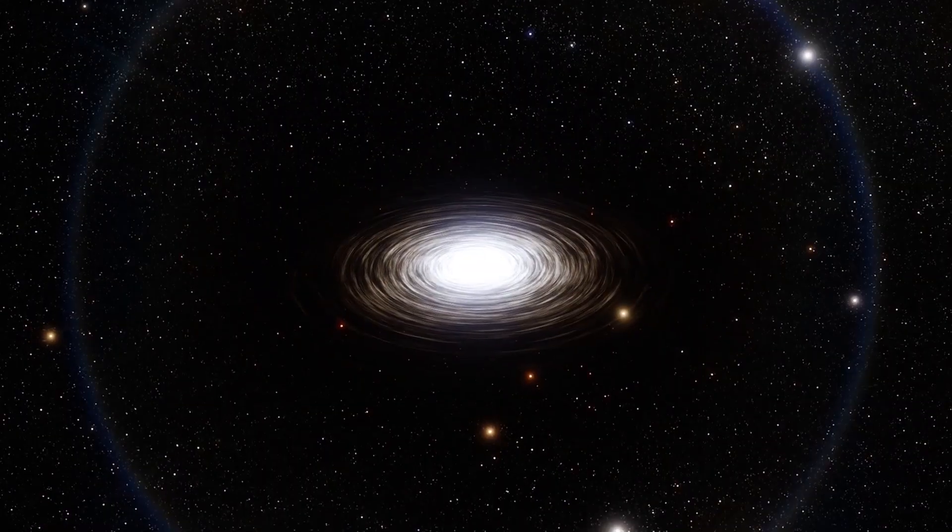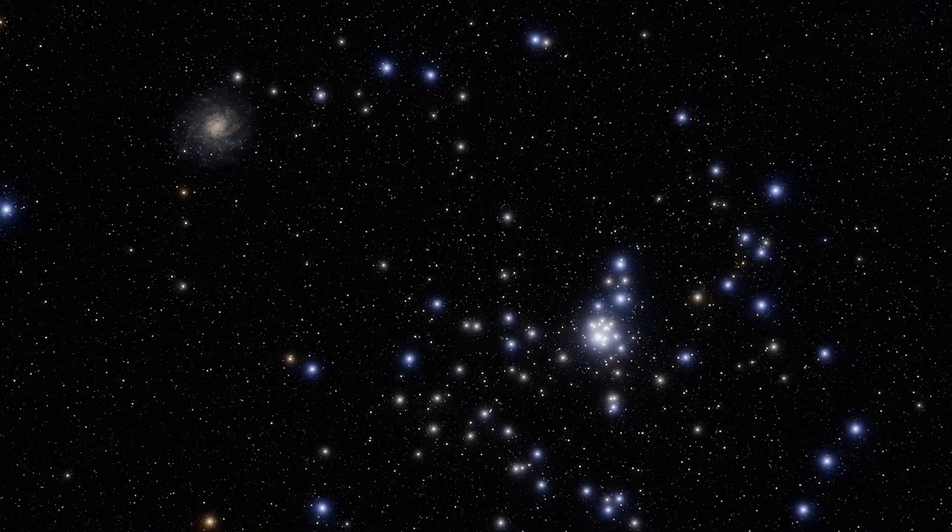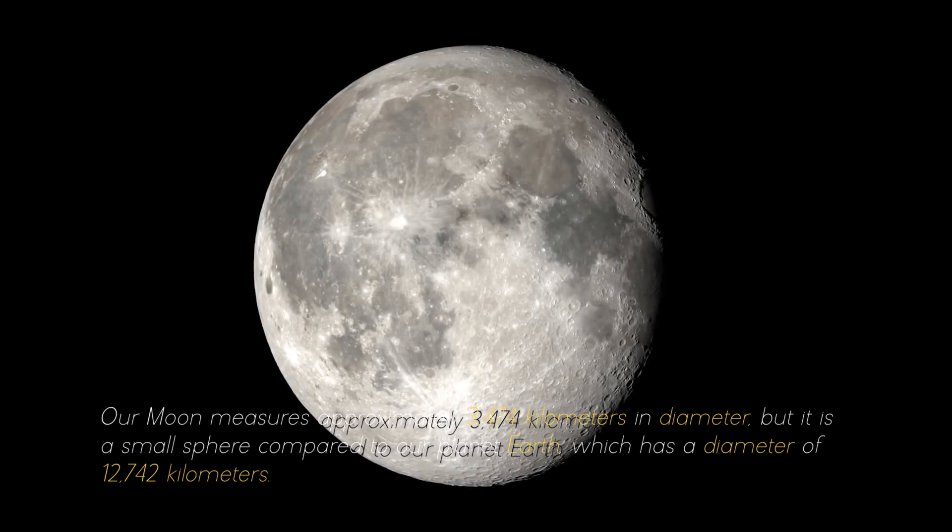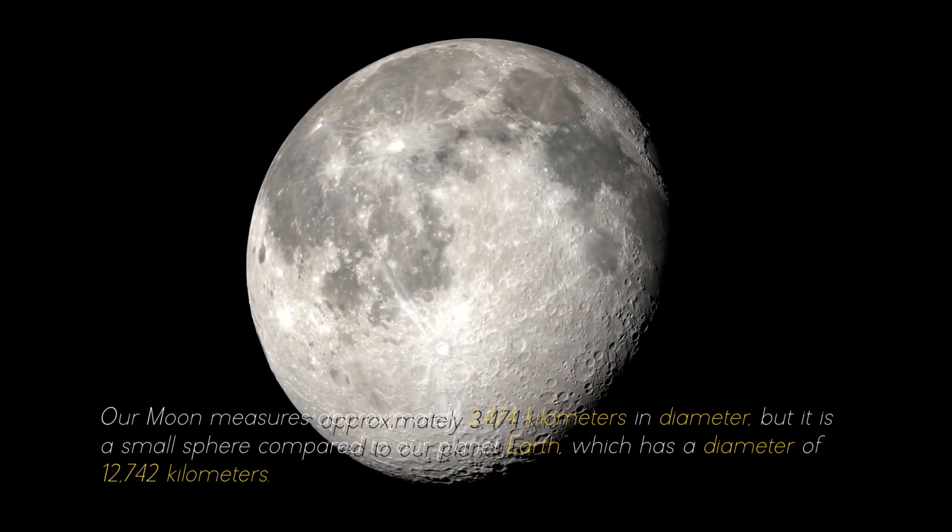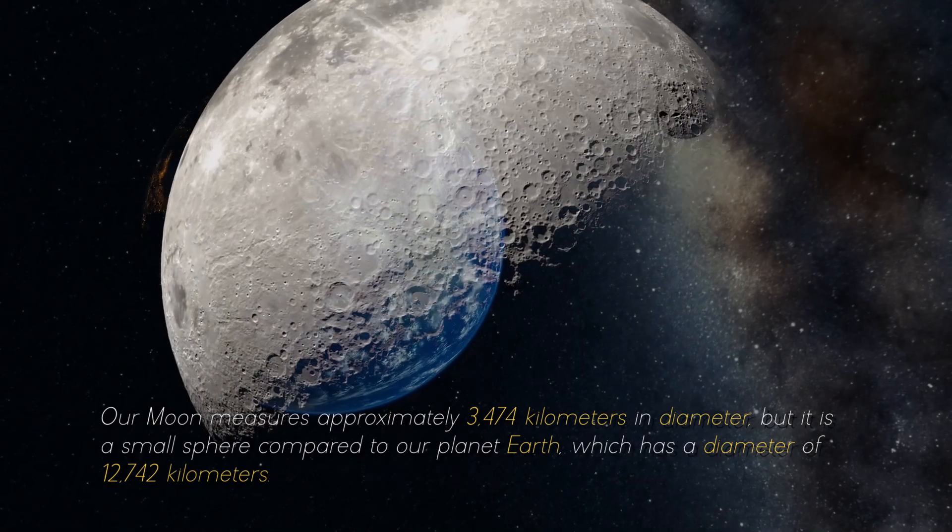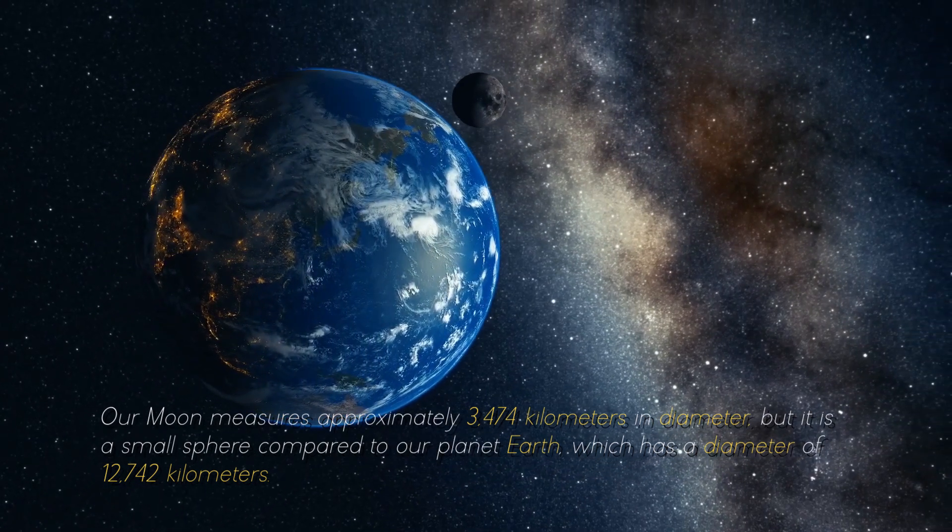To give you an idea of the colossal objects and structures that abound in the cosmos, it is necessary to start at the beginning. Our moon measures approximately 3,474 kilometers in diameter, but it is a small sphere compared to our planet Earth, which has a diameter of 12,742 kilometers.